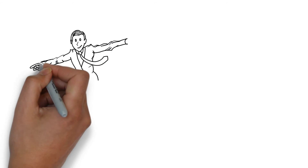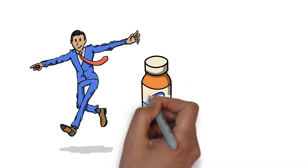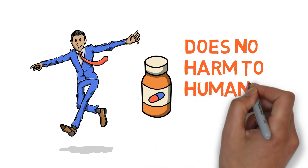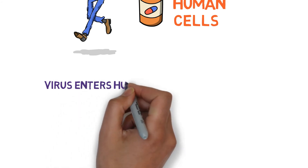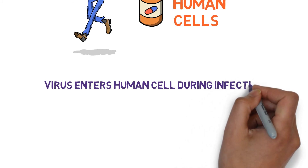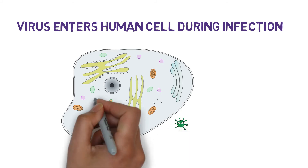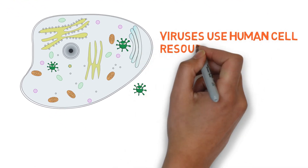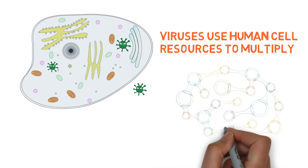Antibiotics have a special property: they only harm the bacterial cell and do not cause any harm to human cells. But viruses are different. A virus functions by first entering into the human cell to cause infection — after attaching to the human cell membrane, the viruses are able to enter inside.